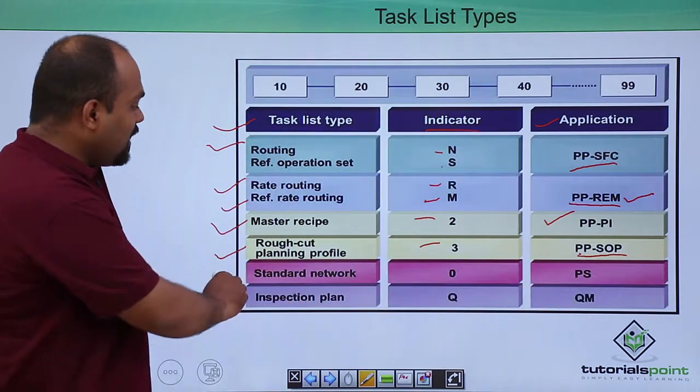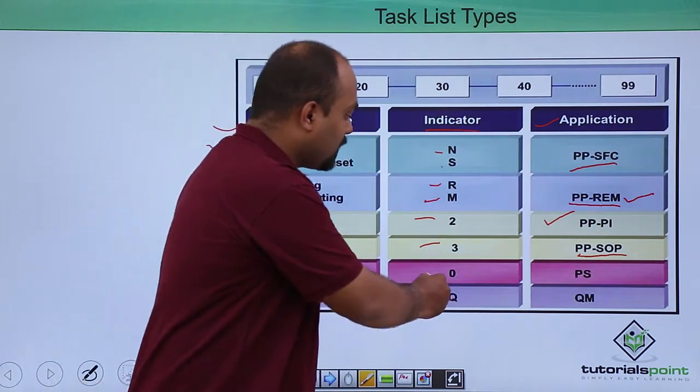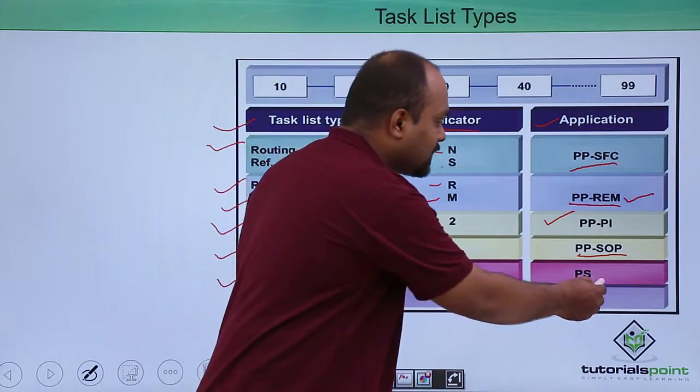The standard network indication is 0 and it is used in project system.